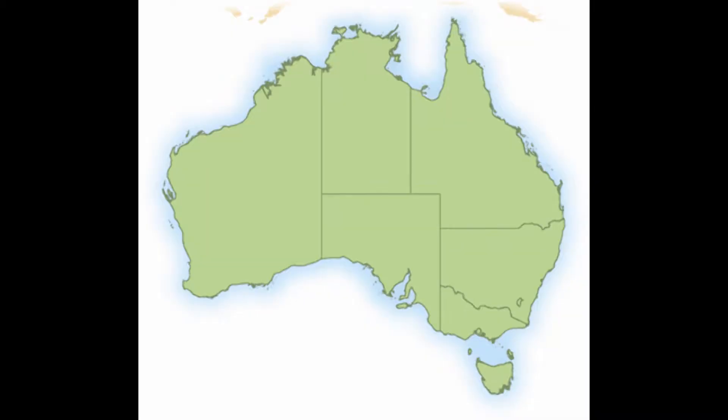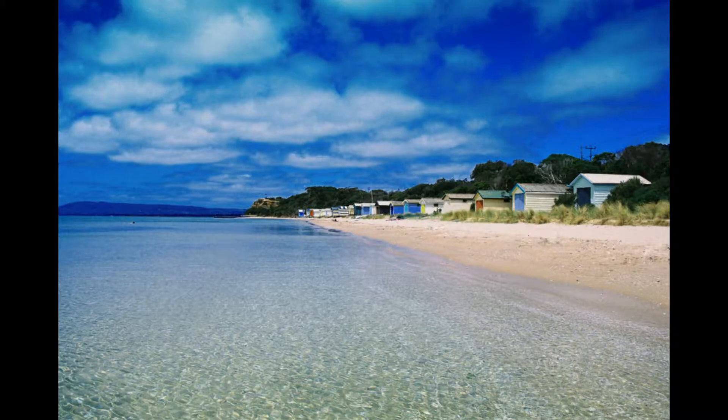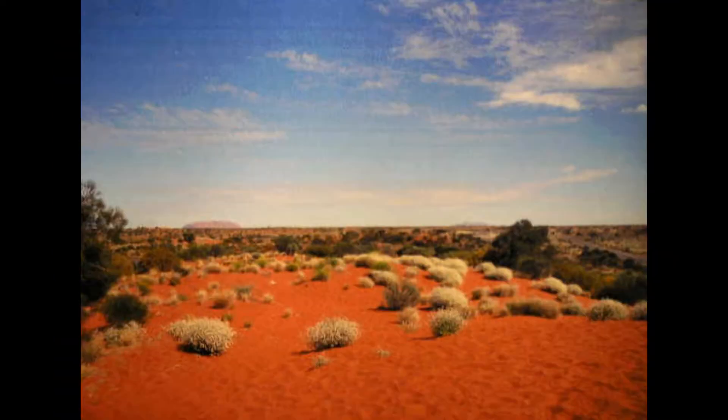Australia is the smallest continent in the world, and consists of the mainland and the island of Tasmania. It is known as the island continent, surrounded by the Pacific and Indian oceans, and its large biological diversity is largely due to its isolation as a continent.